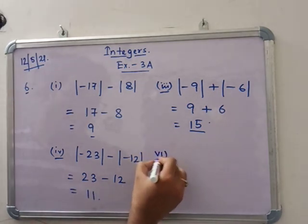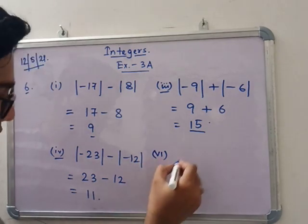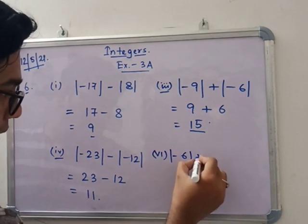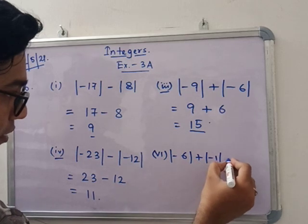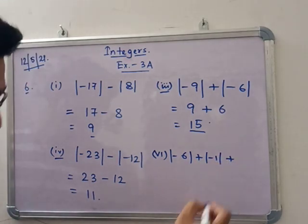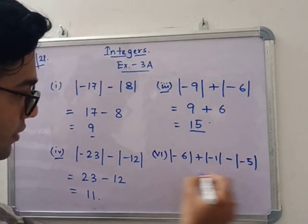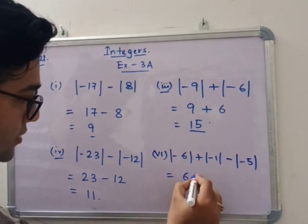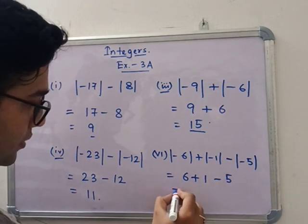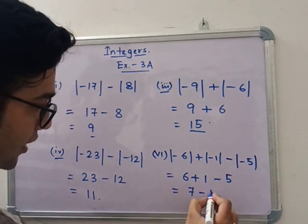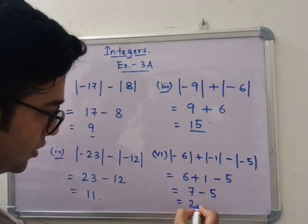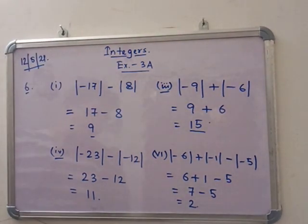Last one, number 6. That is minus 6 absolute value plus minus 1 absolute value plus minus 5 absolute value. So that means 6 plus 1 minus 5. So 7 minus 5, that means 2. Note it down — you only have to take the absolute value and do addition and subtraction. Simple work is this all.